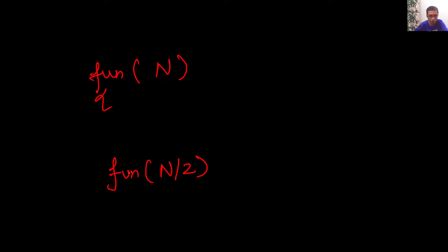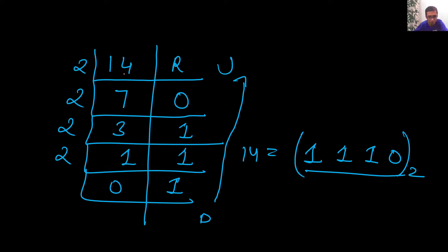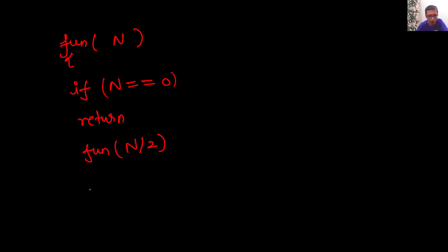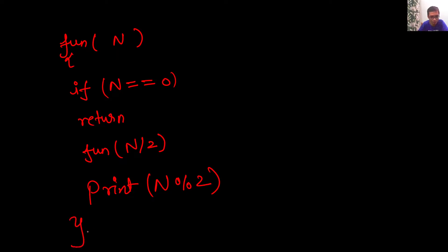My function fun will recursively call fun(n/2). The base condition is: when n equals 0, we cannot divide any further, so we simply return. After the recursive call fun(n/2), I'll print n modulo 2, which is the remainder after dividing n by 2. Then we close the function fun.